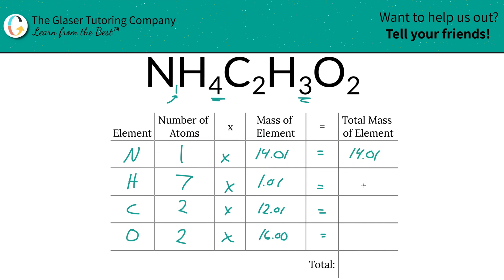The total mass of the nitrogen in the compound is 14.01 units of mass, hydrogen is going to be 7.07 units of mass, carbon is going to be 24.02 units of mass, and oxygen is going to be 32 units of mass.